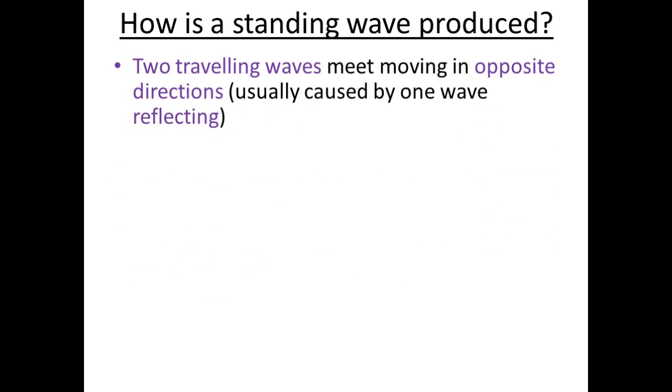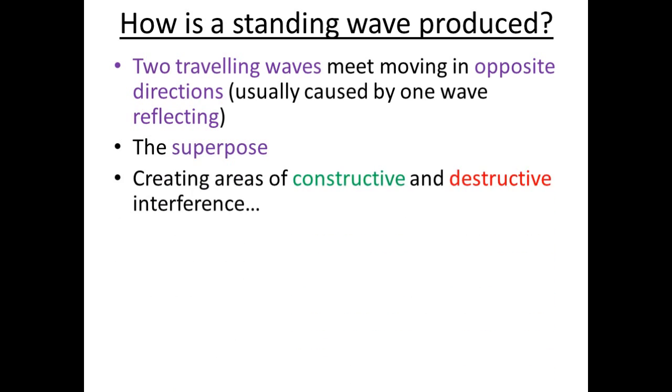How is the standing wave produced? Two waves meet moving in opposite directions. This is usually caused by one wave reflecting. They superpose, they meet, not superimpose, creating areas of constructive and destructive interference.